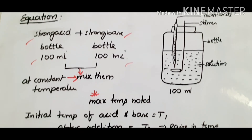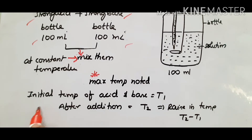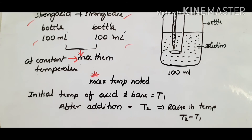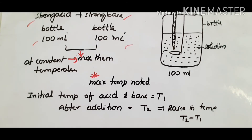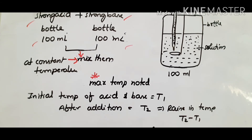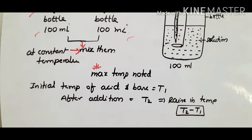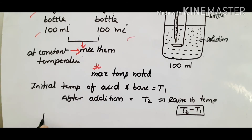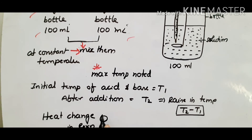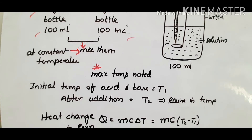The initial temperature of acid and base is T1. After addition, the temperature rises to T2. The rise in temperature is T2 minus T1, that is delta T. The heat change in the reaction is calculated using the formula: q equals m times c times delta T.